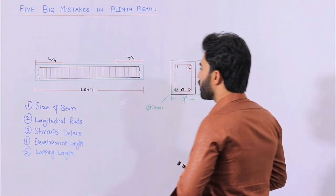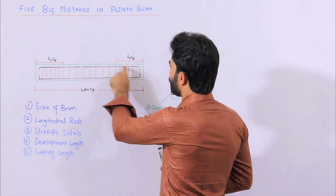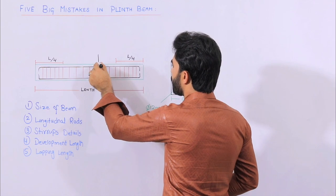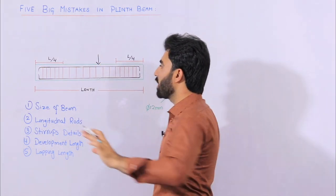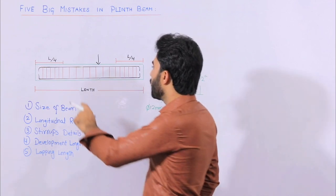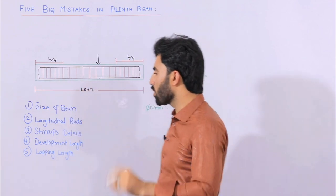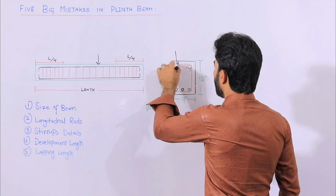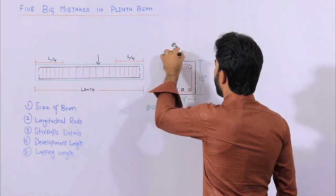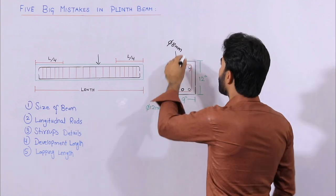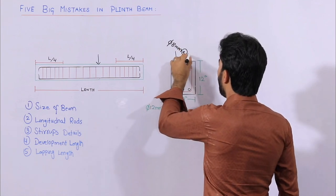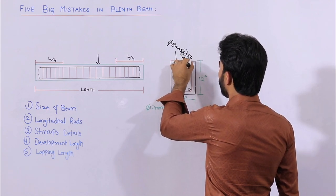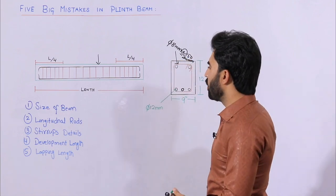Now the third mistake is stirrups details. You can see the longitudinal bars shown in black color inside the beam, and the red lines show the stirrups. Remember, don't use less than 8 mm diameter for stirrups, with a spacing of 150 mm to 200 mm. Don't use less than this.